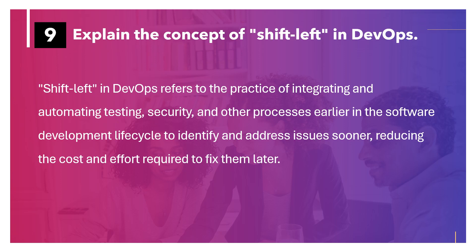Explain the concept of shift left in DevOps. Shift left in DevOps refers to the practice of integrating and automating testing, security, and other processes earlier in the software development lifecycle to identify and address issues sooner, reducing the cost and effort required to fix them later.